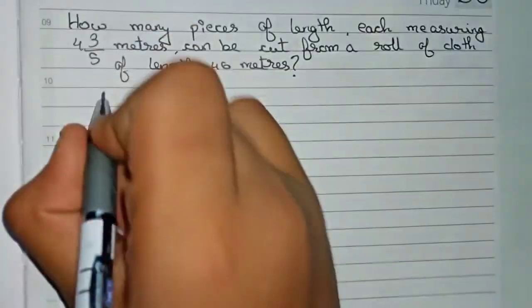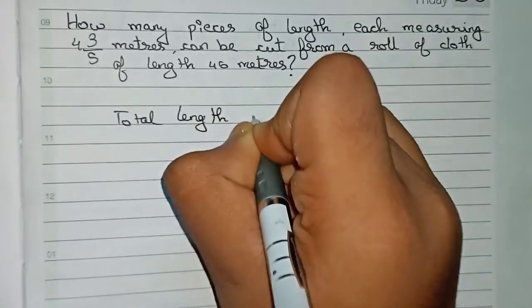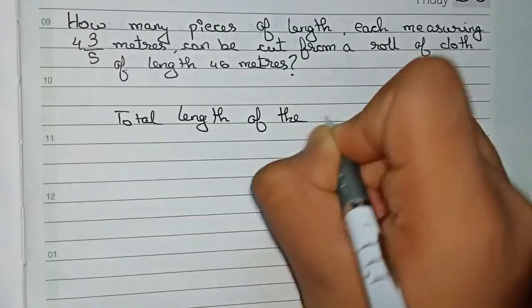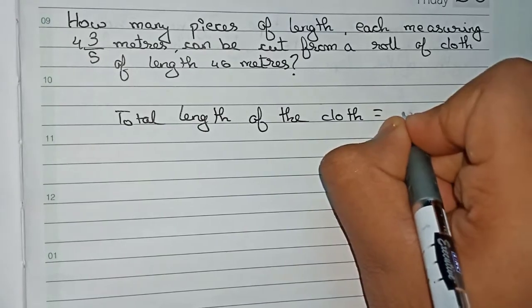First, we write the total length of the cloth. So, total length of the cloth is given as 46 meters. This is the total length.